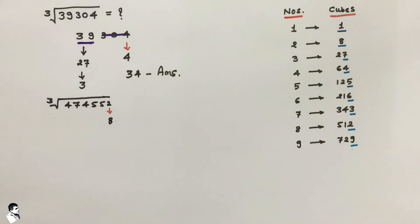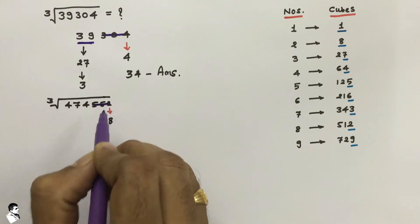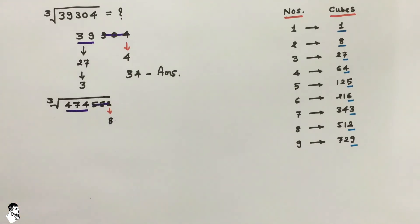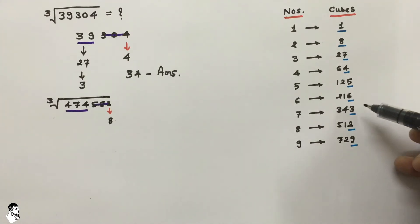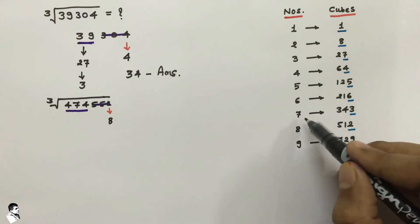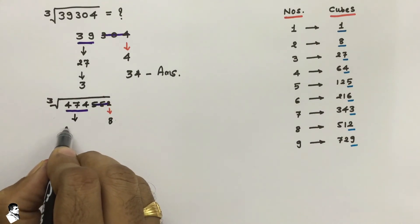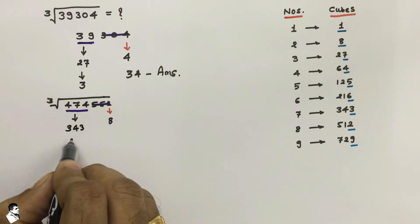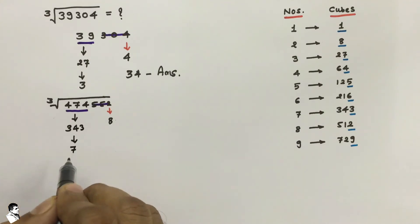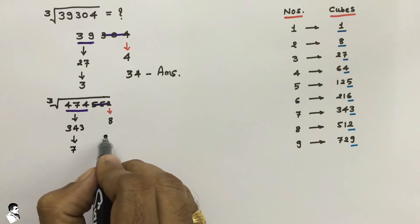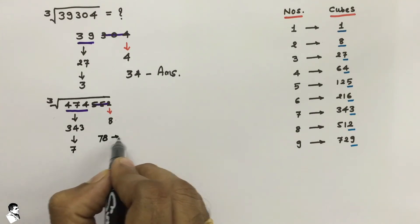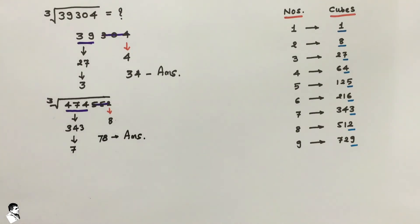Now remove the last 3 digits and focus on the first 3 digits, that is 474. Find 474 in the table or the nearest lower value, which is 343, and that is the cube of 7. Write those values together — the answer is 78.